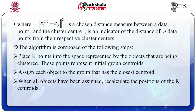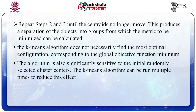The algorithm is composed of the following steps: place k points into the space represented by the objects being clustered — these points represent initial group centroids. Assign each object to the group with the closest centroid. When all objects have been assigned, recalculate the position of the k centroids, and repeat steps 2 and 3 until the centroids no longer move. Although the procedure will always terminate, the k-means algorithm does not necessarily find the most optimal configuration corresponding to the global objective function minimum. The algorithm is also significantly sensitive to the initially randomly selected cluster centers, so it can be run multiple times to reduce this effect.